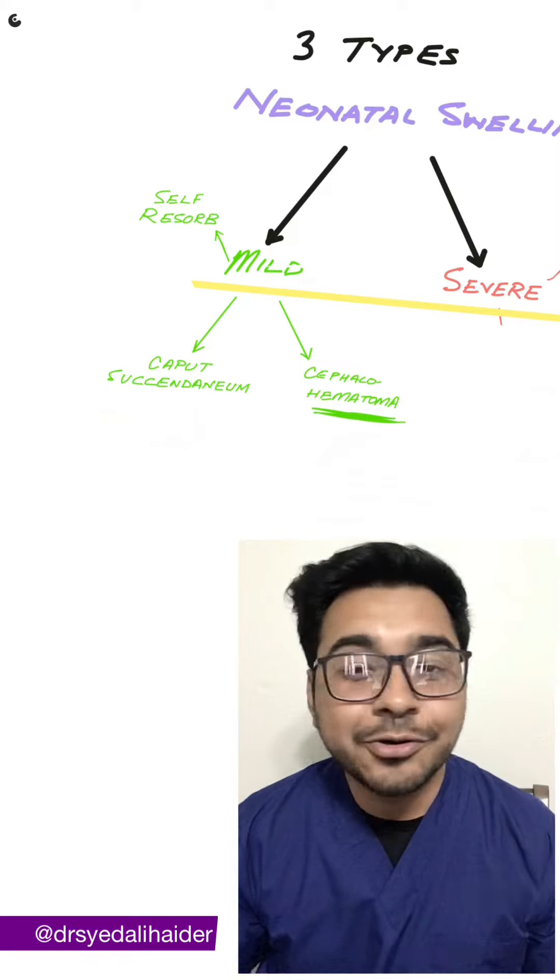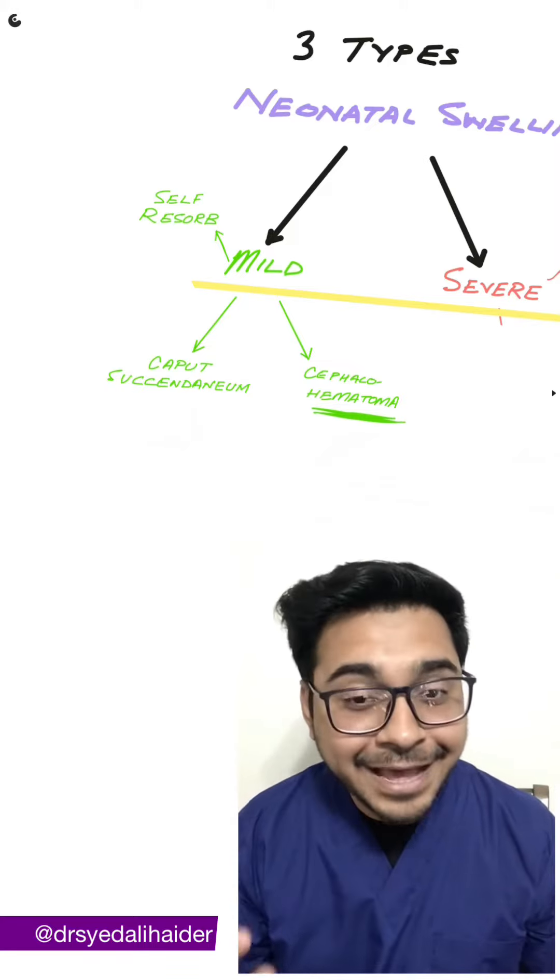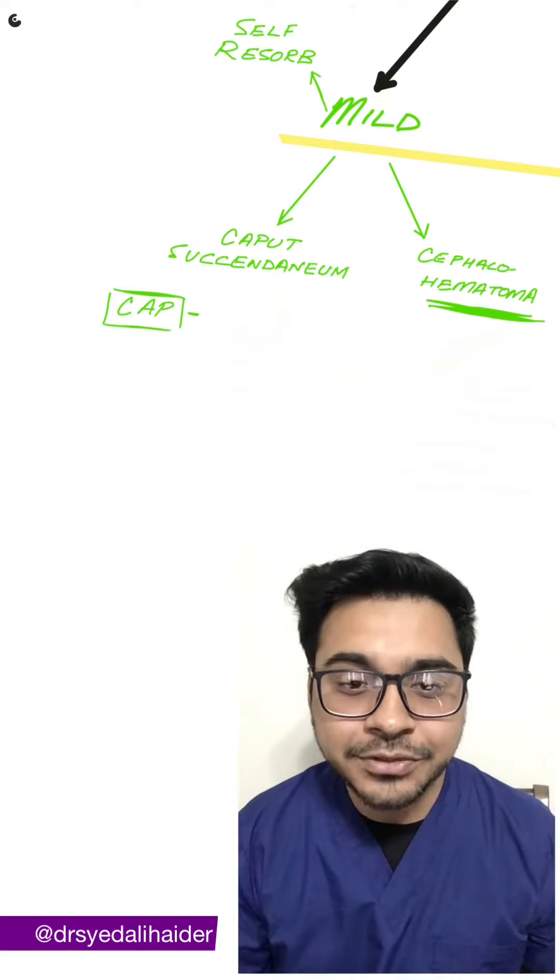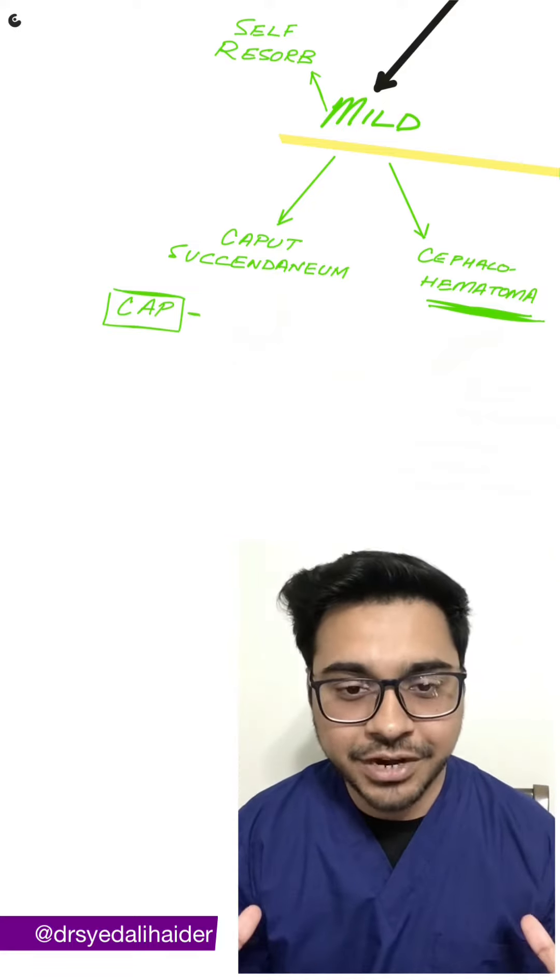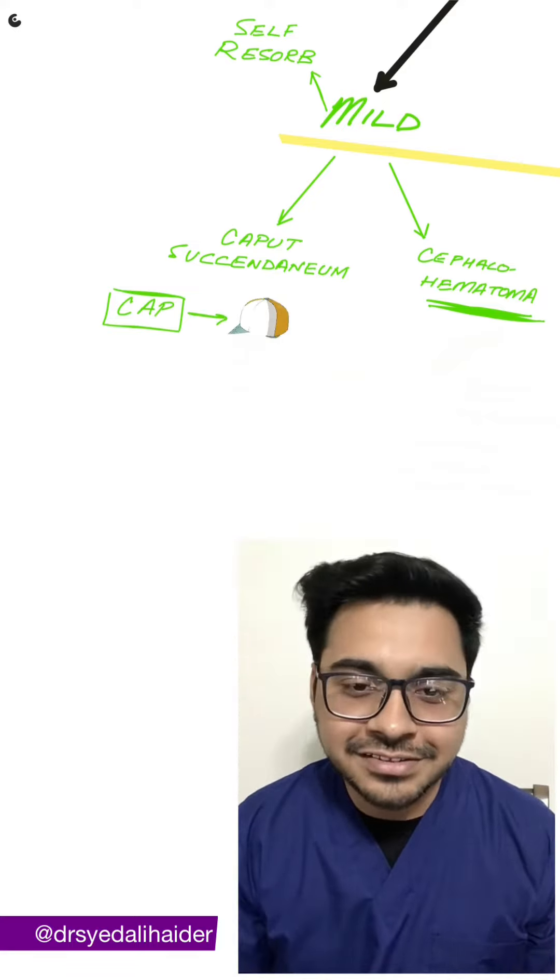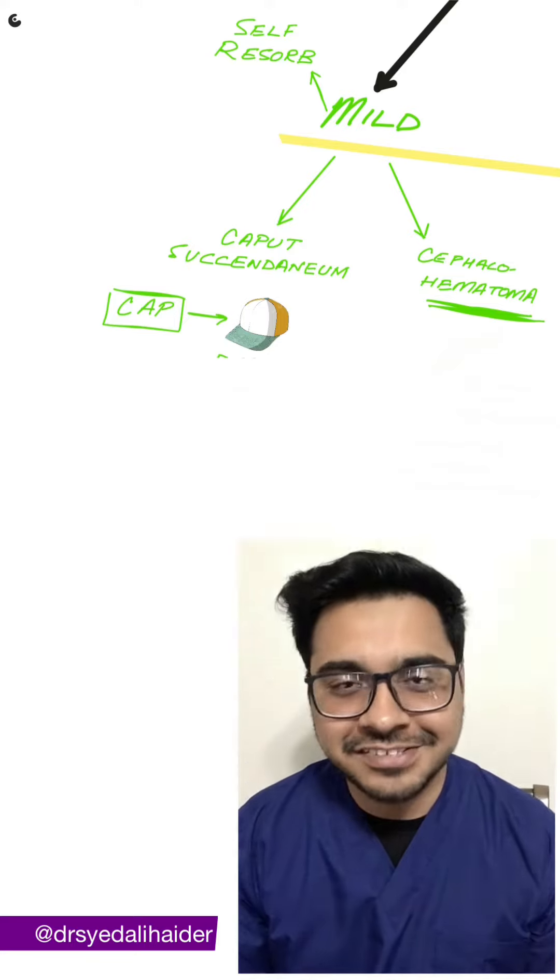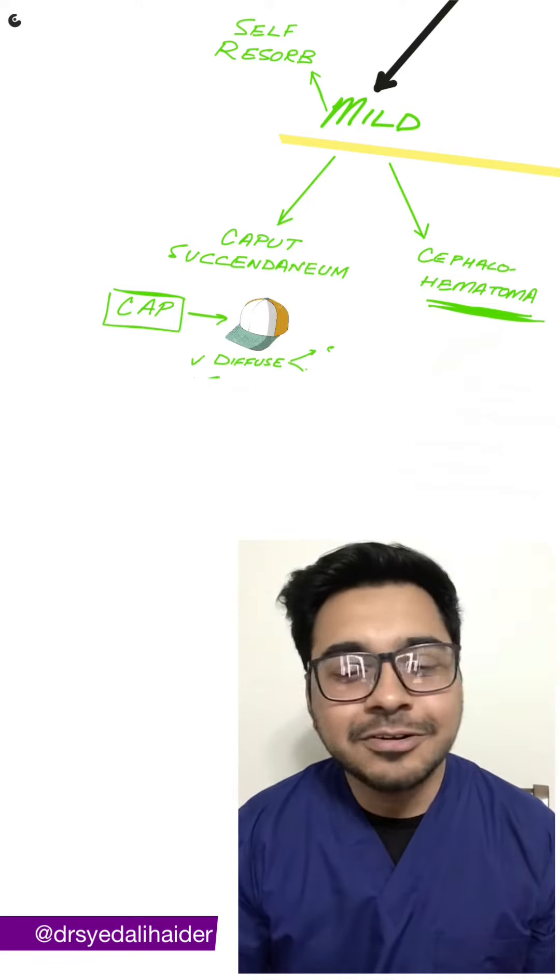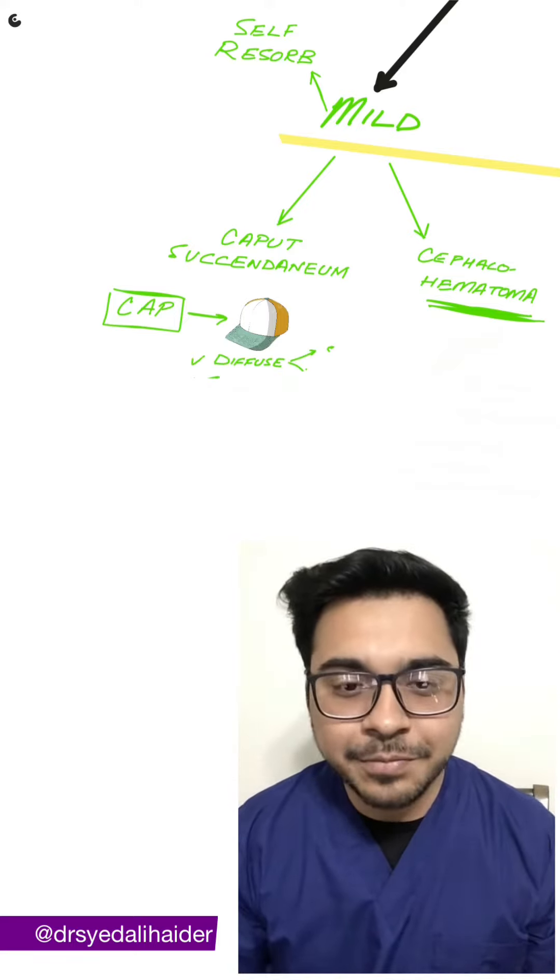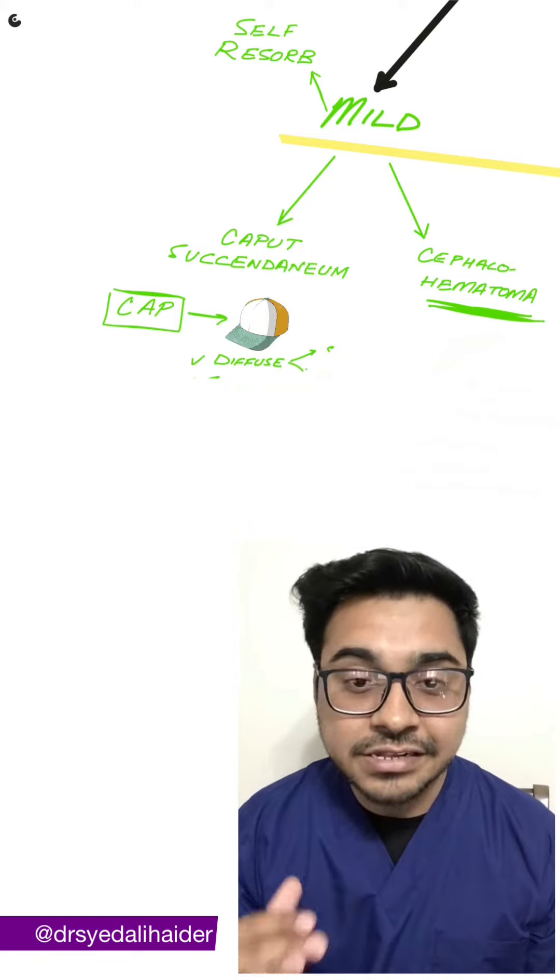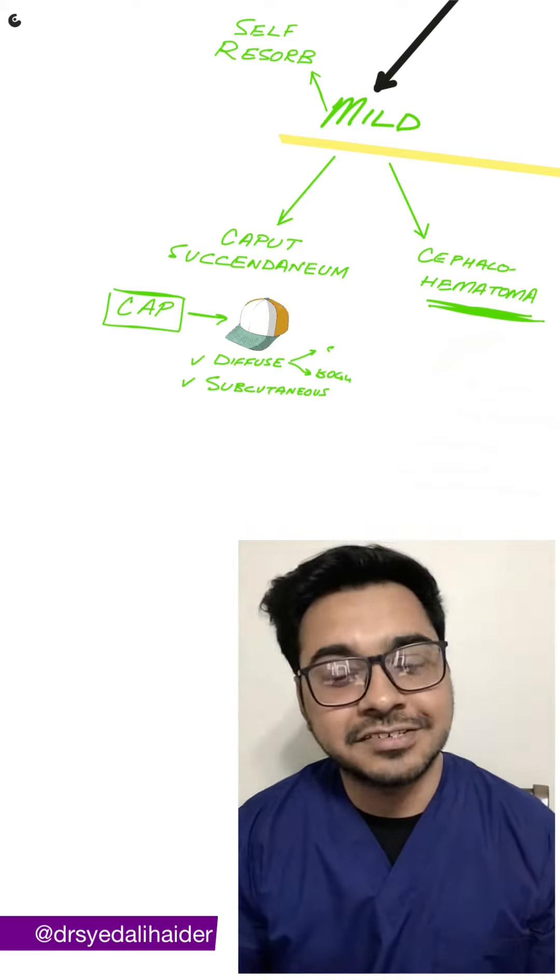So how do you tell these apart? Well, the cap in caput should remind you that the bleeding will be diffusely spread. I like to think since when you wear a cap, it covers the entire skull. I also use this analogy to help me remember that its location is subcutaneous. I like to think near skin.